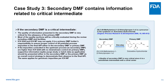If an impurity is controlled in the upstream process in the secondary DMF at a level higher than ICH Q3A with no downstream controls in the primary DMF, supportive information such as spike and purge studies or batch data should be presented in either the secondary or primary DMF as an overall control strategy to demonstrate their absence in the final API. The same applies for genotoxic impurities per ICH M7.